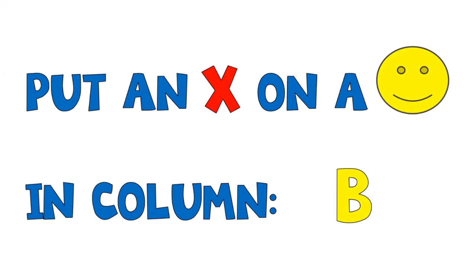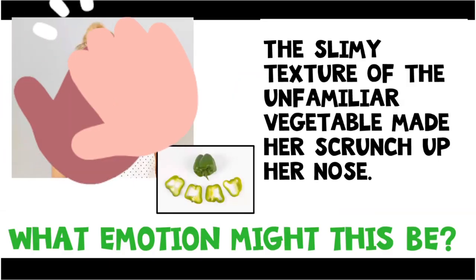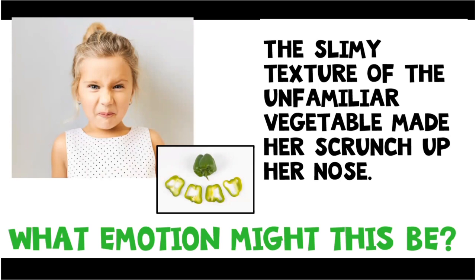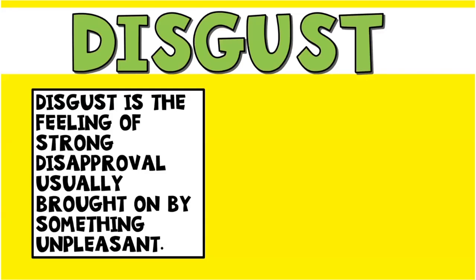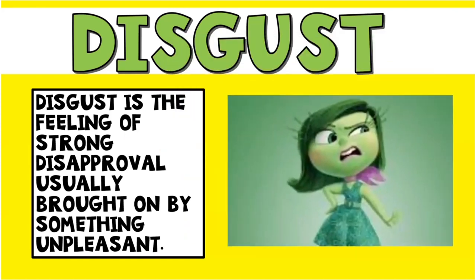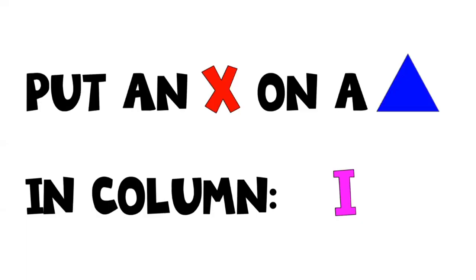Even if you didn't guess happiness, you can still fill out your bingo card every single slide. The next one says: the slimy texture of the unfamiliar vegetable made her scrunch up her nose. If you guessed disgust, you're correct. Disgust is the feeling of strong disapproval, usually brought on by something unpleasant, like slimy vegetables. Put an X on a triangle in column I.